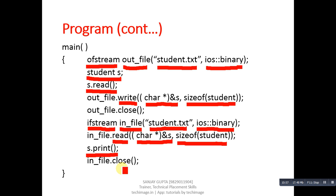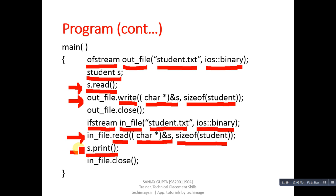In total, four functions are used in this program: s.read reads from console, outfile.write writes into the file, infile.read reads from the file, and s.print prints the results on console. Implement this program on your systems to understand the concept of file streams. Whatever information you enter will be permanently stored inside student.txt. Thank you for watching this video.